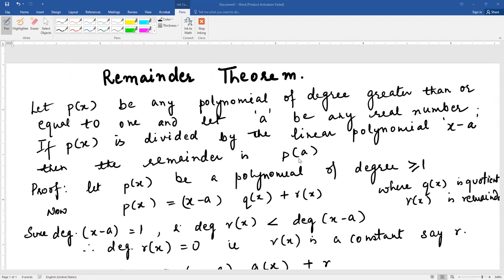Let's prove this. We take p(x) as a polynomial of degree greater than or equal to 1, and we have to divide it by x minus a. So if p(x) is divided by x minus a, then let q(x) be the quotient plus the remainder r(x).